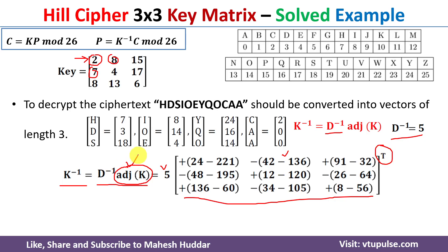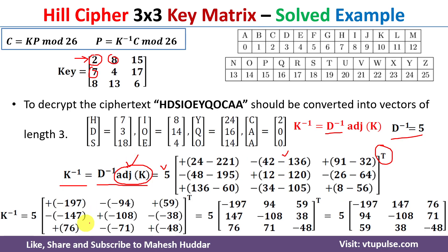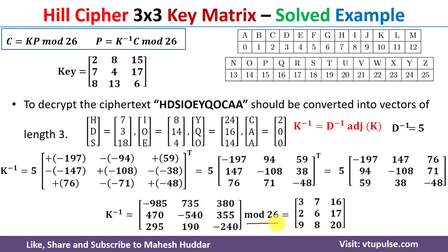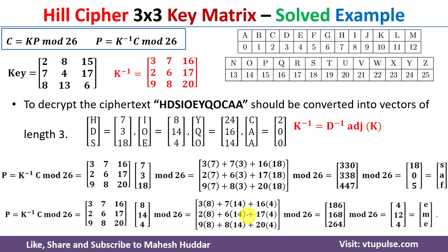Taking the transpose of the cofactor matrix gives the adjoint of K. Simplifying the values and then multiplying by d⁻¹ = 5, we take the result mod 26. For negative values, the modulus is computed as described in the previous example. The final result gives us K⁻¹, the inverse key matrix used for decryption.